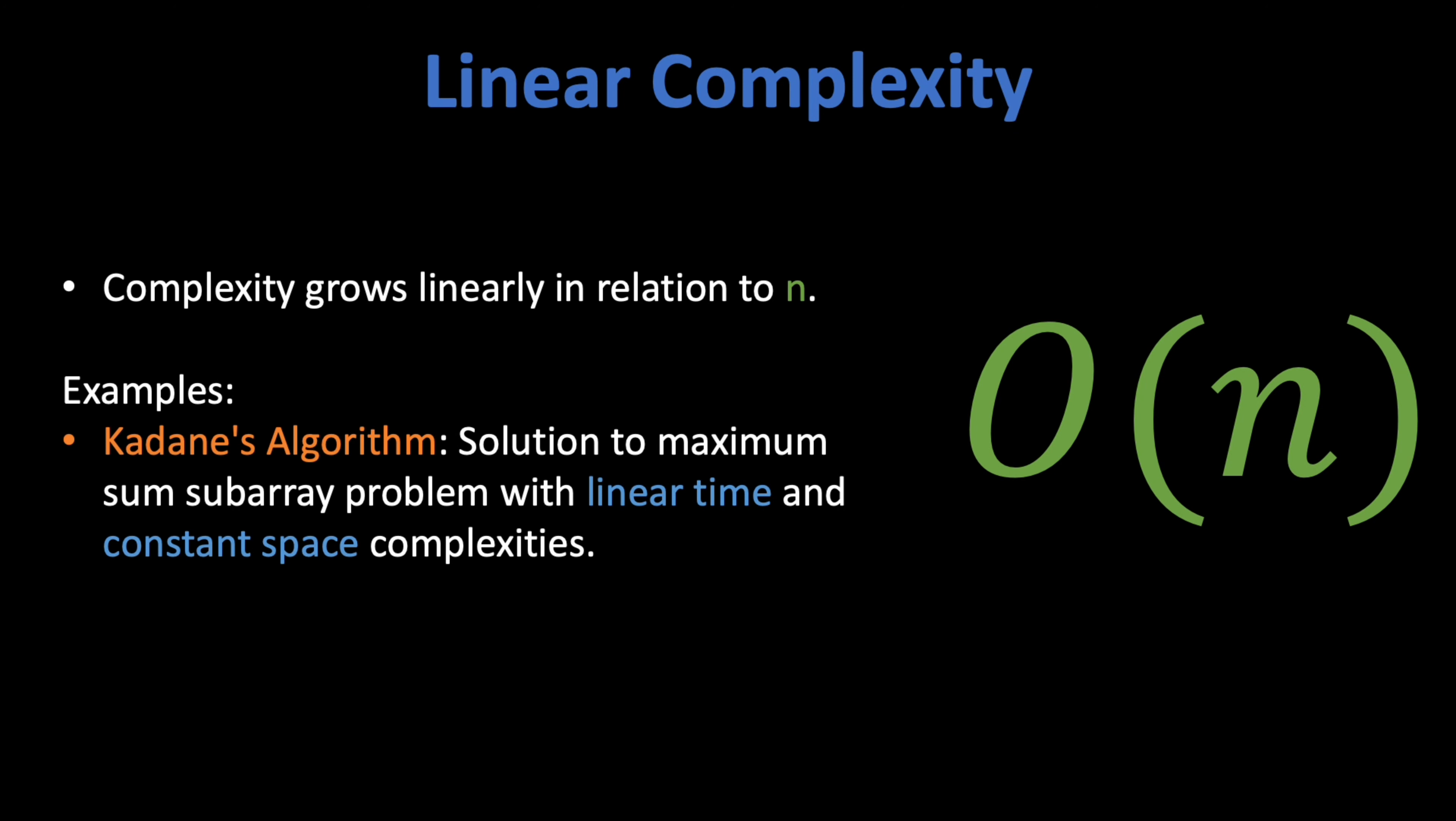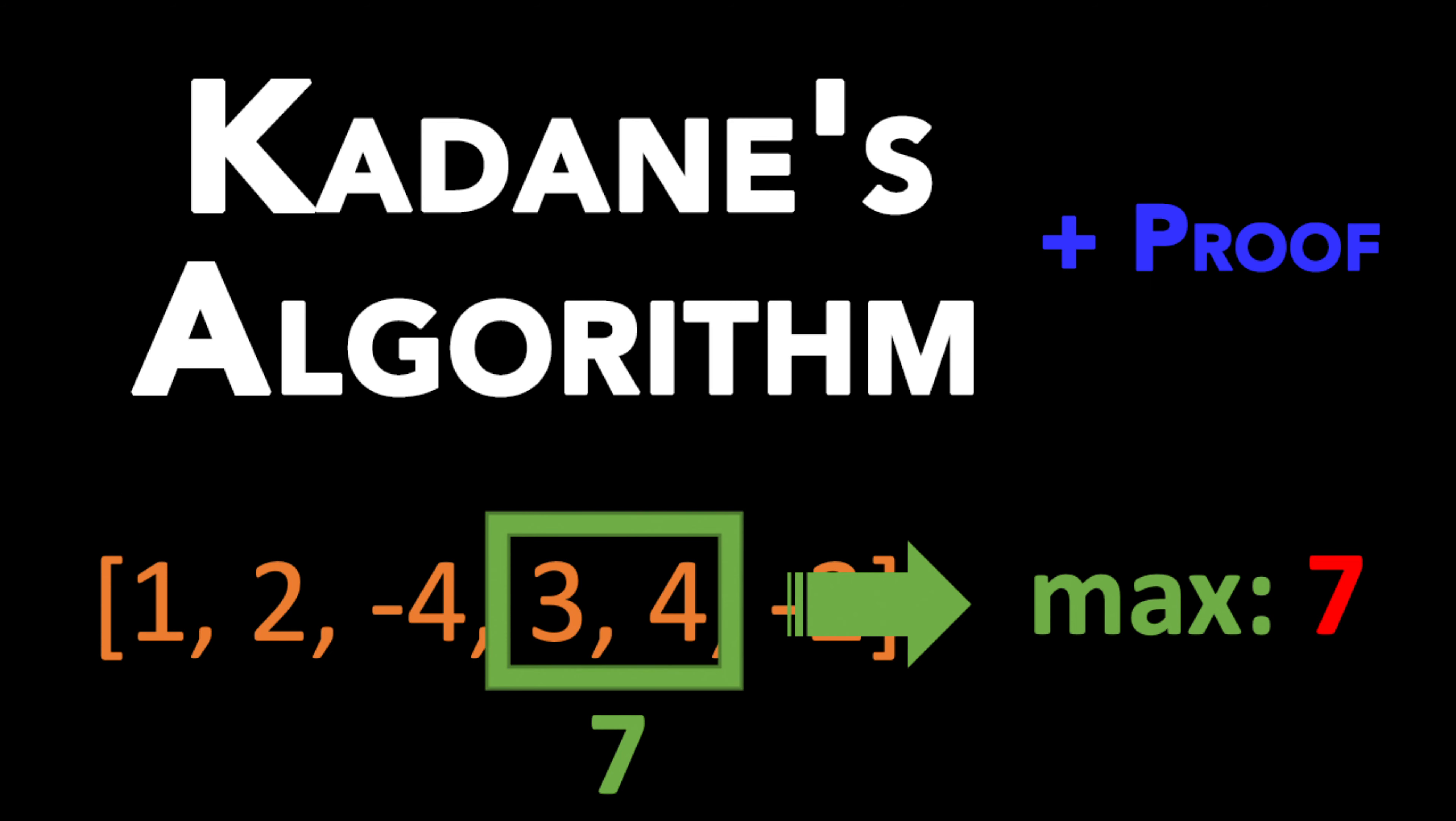A great example of this is Kadane's algorithm. When you have an array of integers and you are looking for the subarray with the maximum possible sum, you can apply Kadane's algorithm to get the solution in linear time. Kadane's algorithm only needs to read each member of the array once. Hence, you can process the entire array in only O(n) time. On the other hand, it has O(1) space complexity since it only needs to create a couple of variables. If you want to learn more about Kadane's algorithm, I have a dedicated video on it with a ton of illustrations. And the link to it is in the video description.